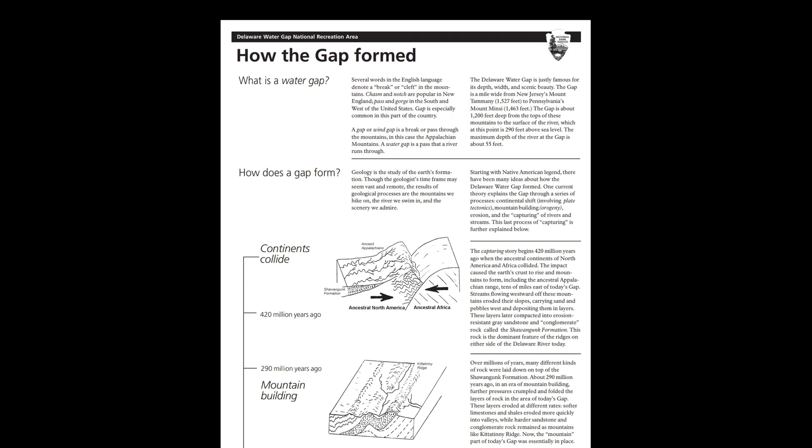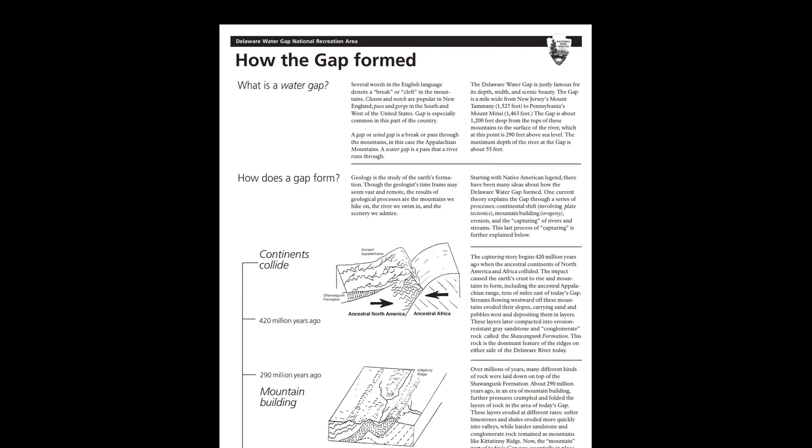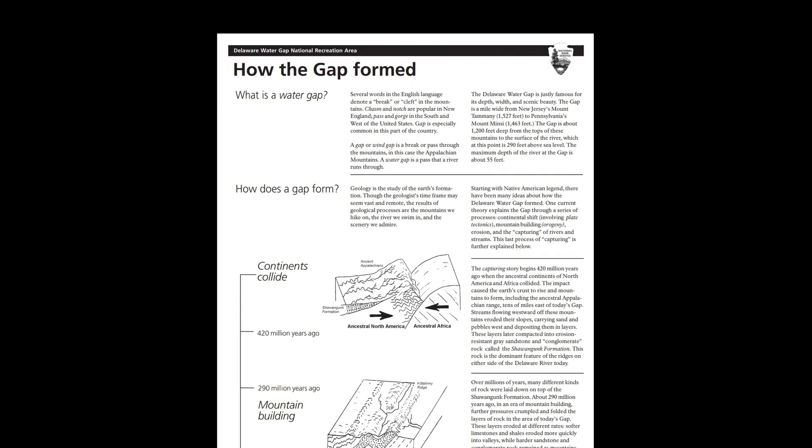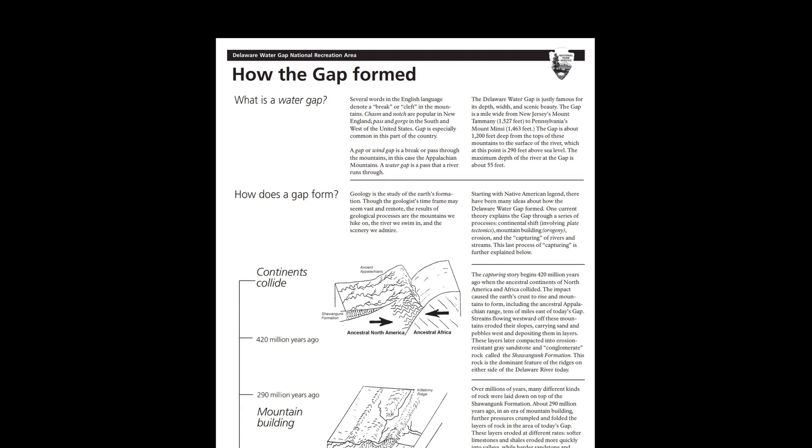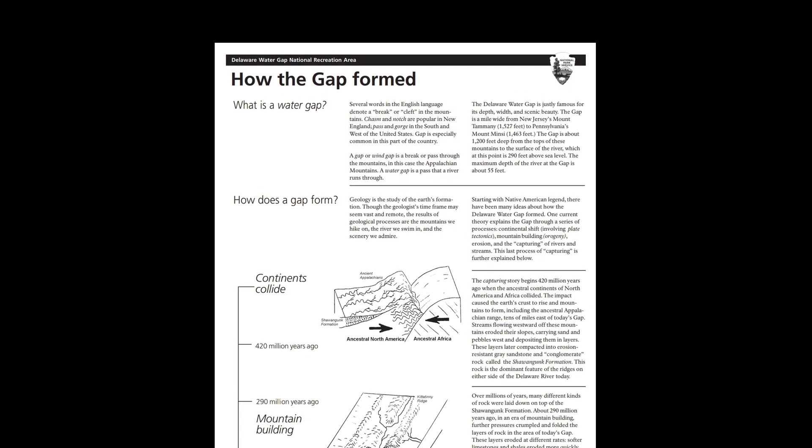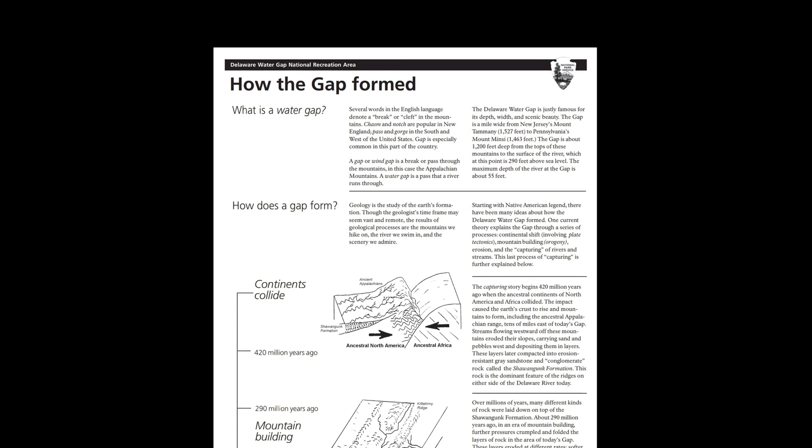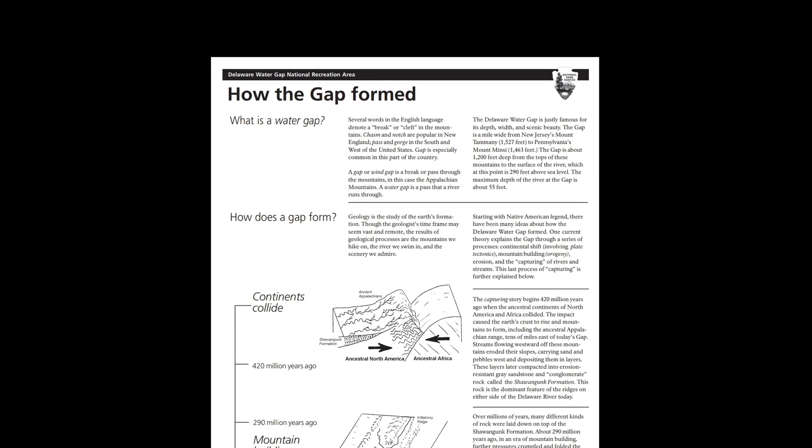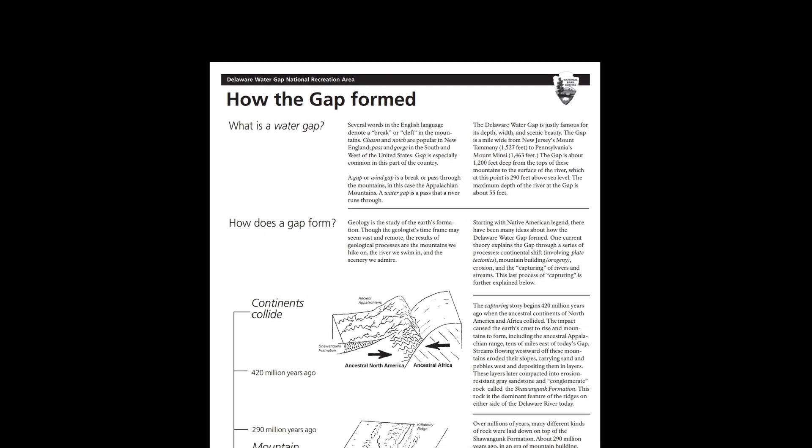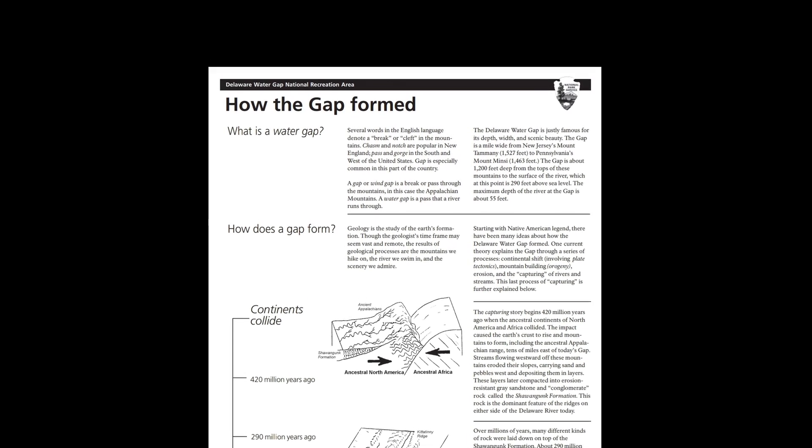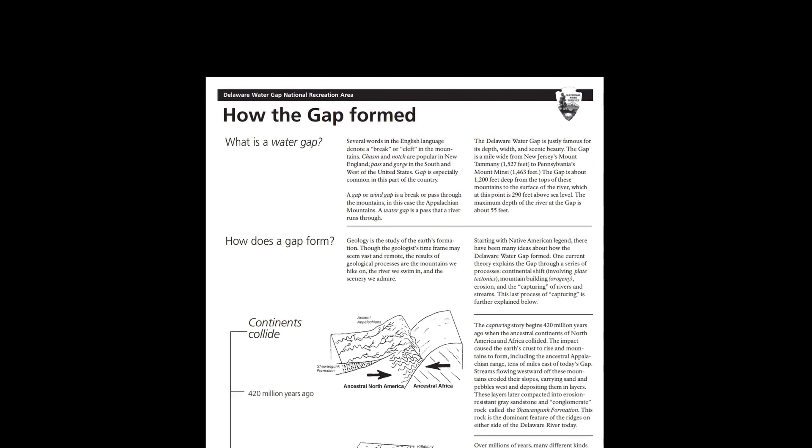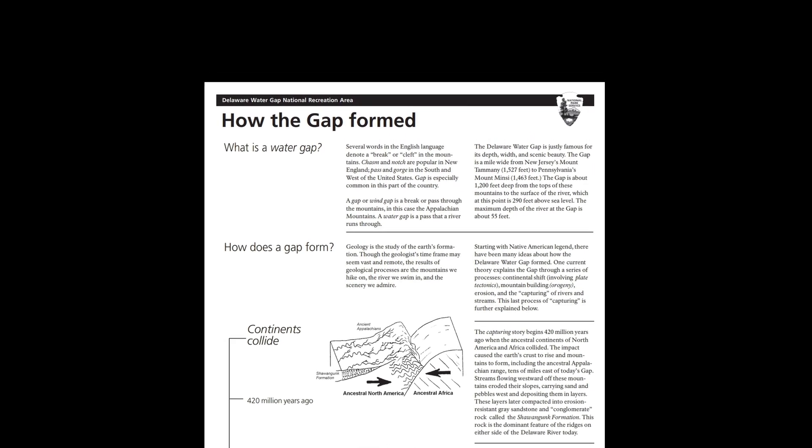The Delaware Water Gap is justly famous for its depth, width, and scenic beauty. The gap is a mile wide from New Jersey's Mount Tammany to Pennsylvania's Mount Mincy. The gap is about 1,200 feet deep from the tops of these mountains to the surface of the river, which at this point is 290 feet above sea level. The maximum depth of the river at the gap is about 55 feet.